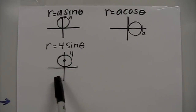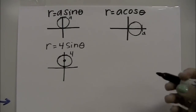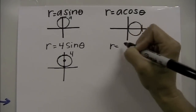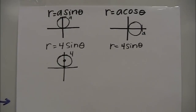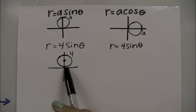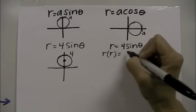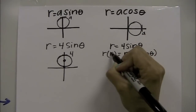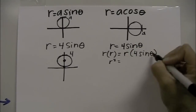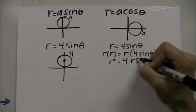If 4 were negative, this would be below the x-axis. We can verify this by looking at the equation — it's a polar equation. We can change it to rectangular form to verify that it does indeed represent that circle. If I multiply both sides by r, this becomes r squared equals 4 times r·sine(θ).